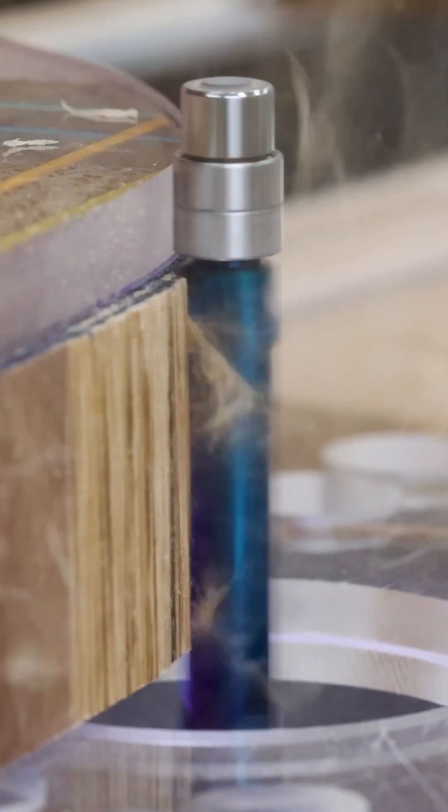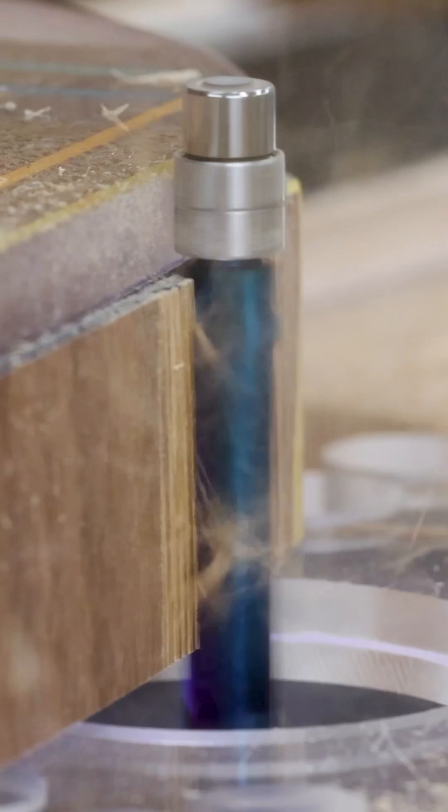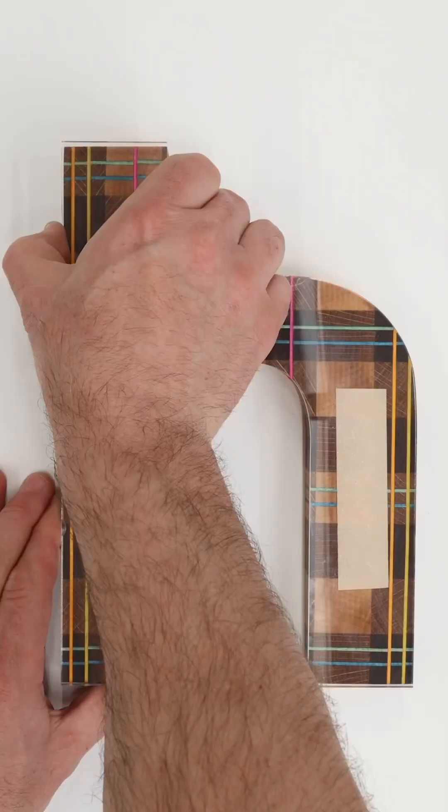Finally, shave off any excess material using a flush trim bit or pattern bit on your router. This will make our letter exactly the same shape as our router template.